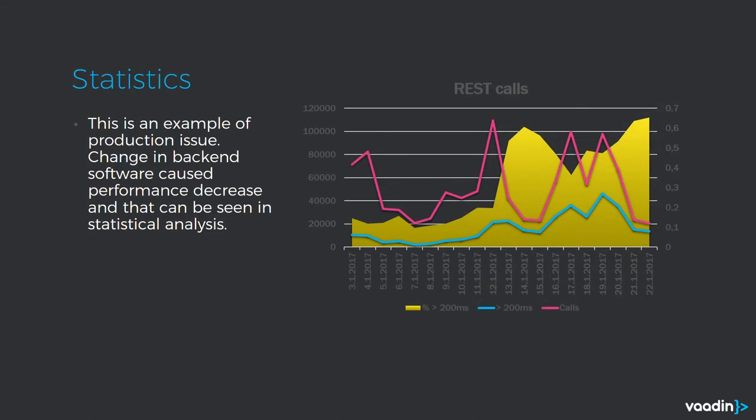Here I have an example of a case where we had a back-end system and did an update which caused it to become much slower than before. It's sometimes difficult to find these issues unless you do a statistical analysis, because the system seems to be working normally but may show some symptoms of slowness. In the statistics, you can clearly see in the yellow area chart that when the incident happened, the new version was performing badly.